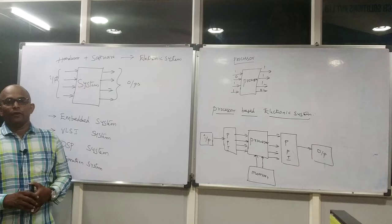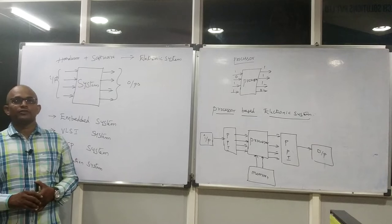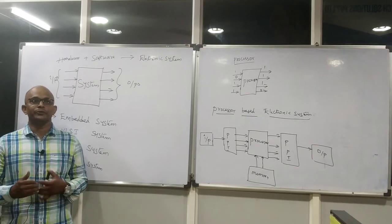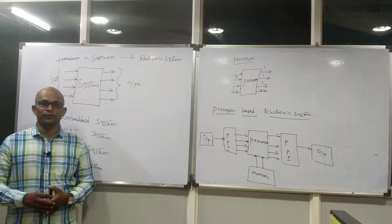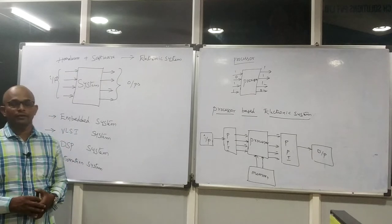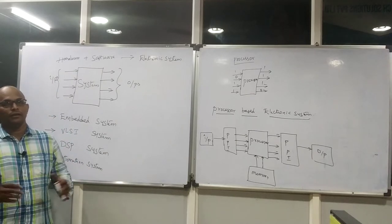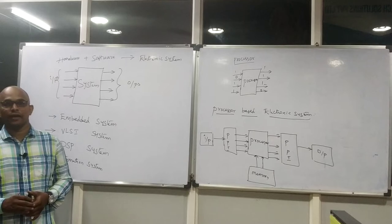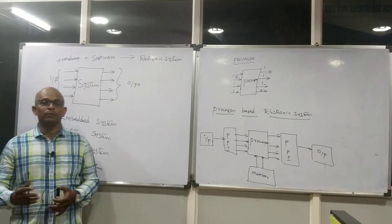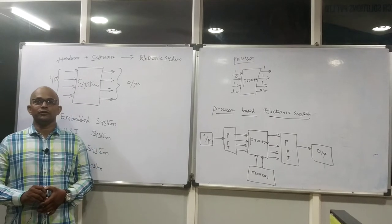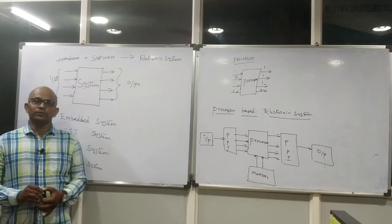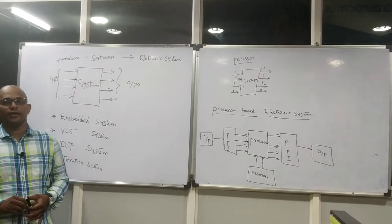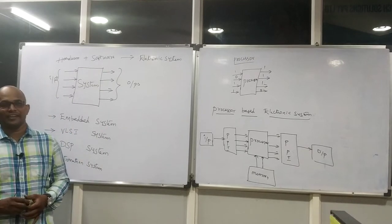Basically, people have different choices in core domain whenever you are trying to choose a career in the embedded domain. So you have confusion after ECE or EEE branch completion of your graduation. So you have to choose a specific core domain. Again, there are different categories here.